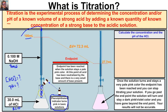We keep adding drop after drop until we reach what is called an endpoint. The endpoint has been reached when the solution stays a pale pink color. At this point, all the acid in the Erlenmeyer flask has been neutralized by our sodium hydroxide solution. There is a very small amount of base remaining, visible as a pale pink color. If we swirl the flask and it stays pink and doesn't turn clear, we've reached our endpoint and the neutralization reaction is complete.